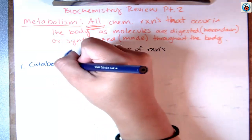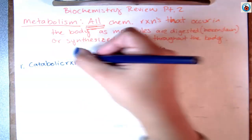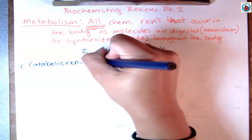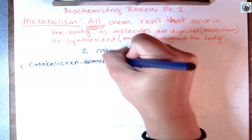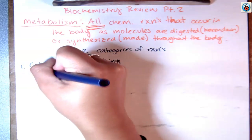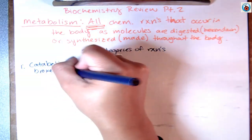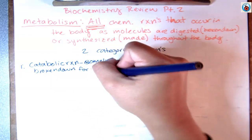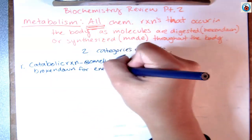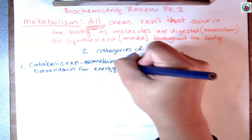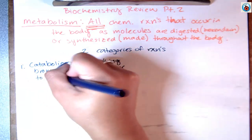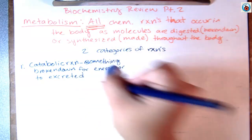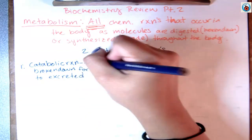A catabolic reaction is something broken down — broken down for energy or to be excreted. So when you are trying to get rid of something, you're typically going to break it down into smaller pieces.